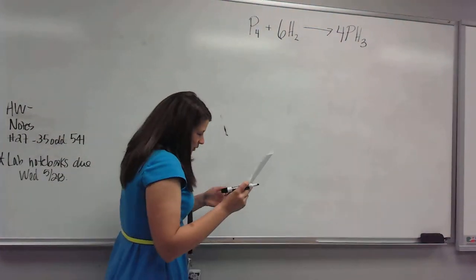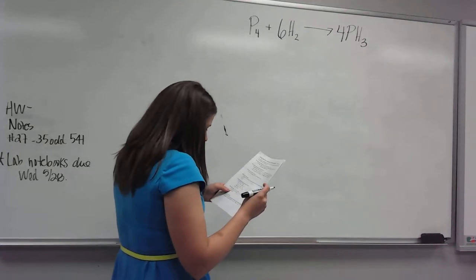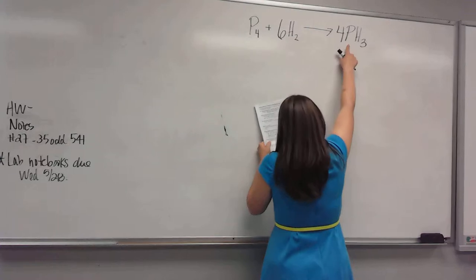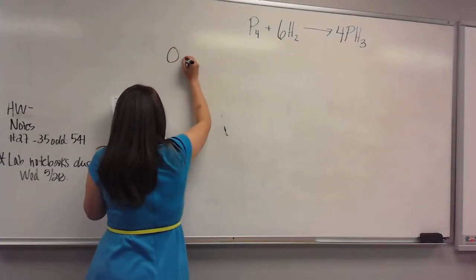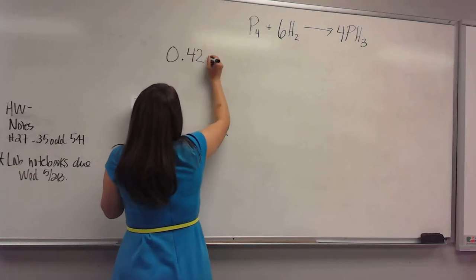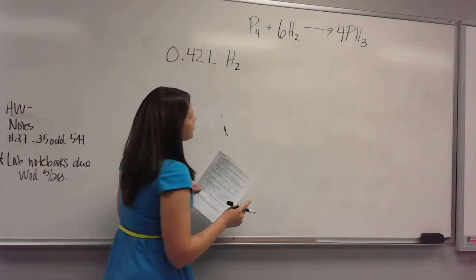All right, so this one's asking how many liters of phosphine, so this guy, how many liters of this are formed when you have 0.42 liters of hydrogen that reacts with phosphorus?